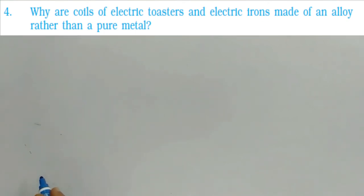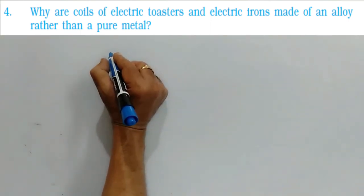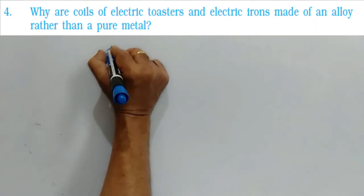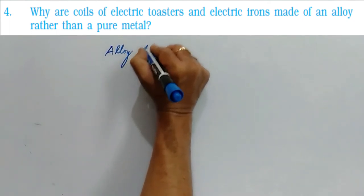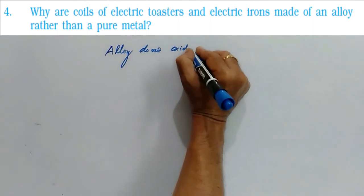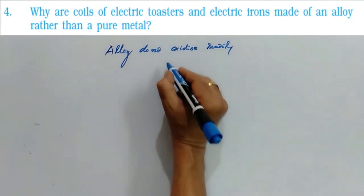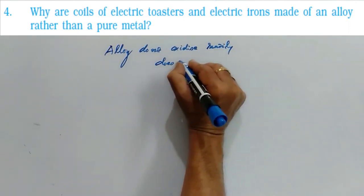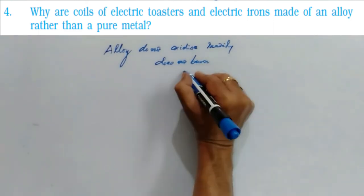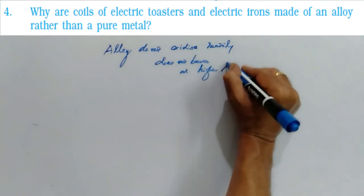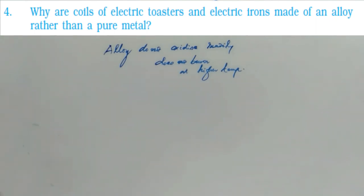The answer, why do we prefer the resistance of electric resistance coils, toaster and electric iron are made up of an alloy rather than a pure metal? The answer is alloy do not oxidize readily. That is, it does not catch the fire or it does not burn at higher temperatures, whereas metals will burn. So this is the reason.